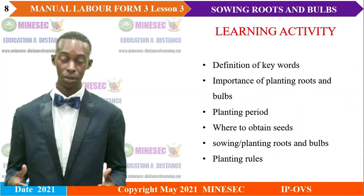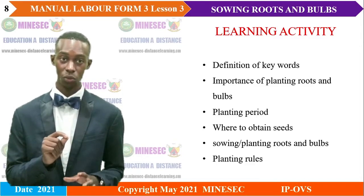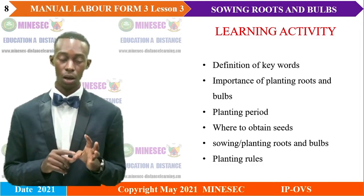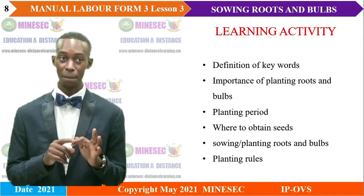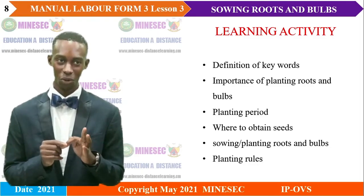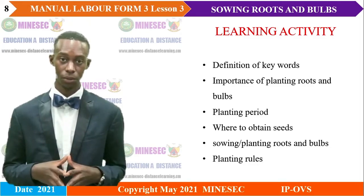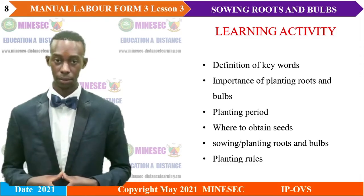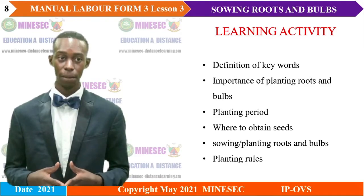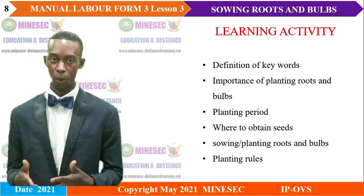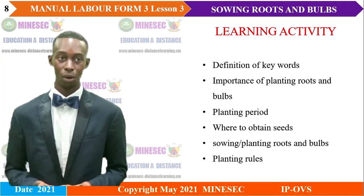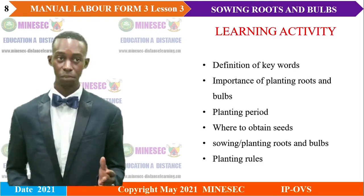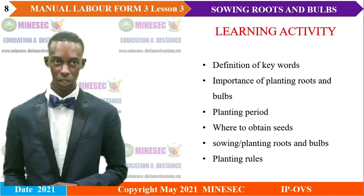The learning activities are the lesson content we are going to explore. We are going to look at the definition of keywords, the importance of planting roots and bulbs, followed by the planting period — that is, when to plant — then where to obtain seeds, the process of sowing or planting roots and bulbs, and lastly the planting rules.